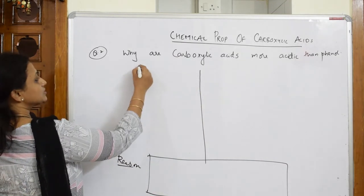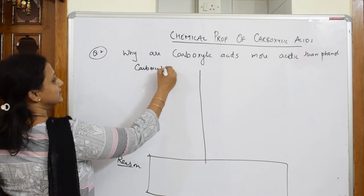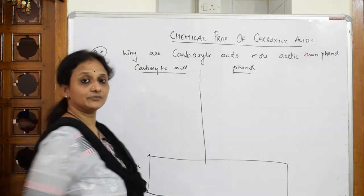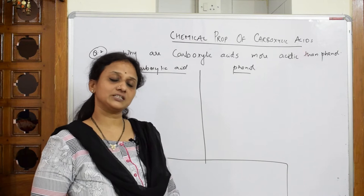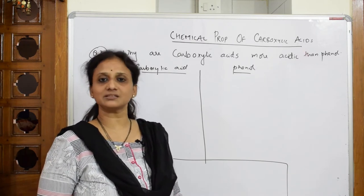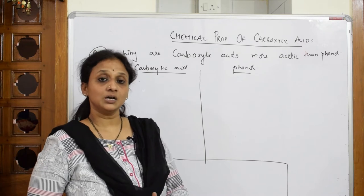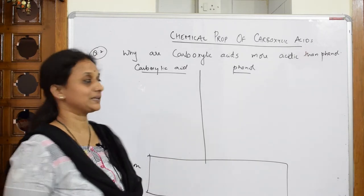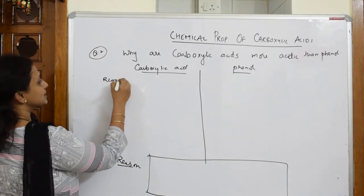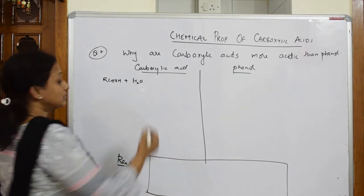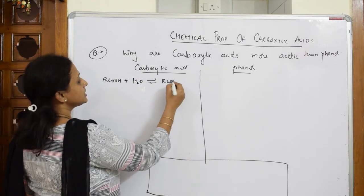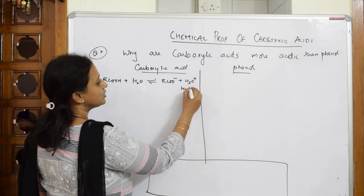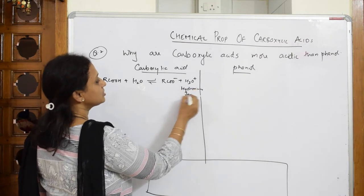This column is for carboxylic acids and this column is for phenol. Whenever we prove something is an acid, we dissolve it in water — if it is dissociating or giving out H+ ions, I call it an acid. We can also prove that in terms of hydronium ion H3O+. First, I'm going to take a carboxylic acid and dissolve it in water, and it dissociates into the carboxylate ion plus H3O+, the hydronium ion.